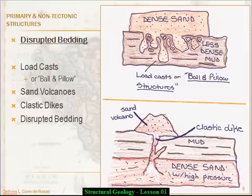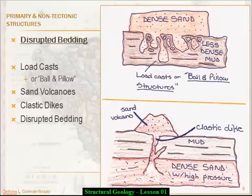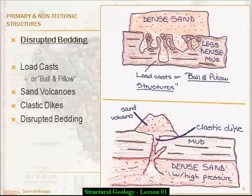This can also happen with conglomerate — it doesn't have to be a sand — but the point is that it's still unconsolidated, still able to flow that way, and it's about all that extra water entering it and creating a high-pressure environment. Now, we get back to our main topic of disrupted bedding. Sometimes it's not as neat as a clastic dike and a little mound of sand — sometimes it just breaks up the bedding around it, and when that happens, you simply call it disrupted bedding. We'll come back to these density differences and pressure differences again in this lesson and in later lessons.